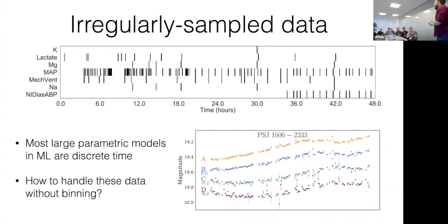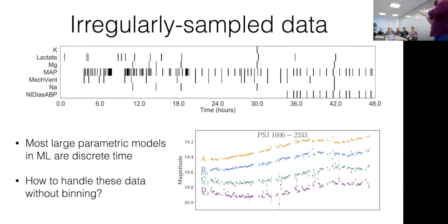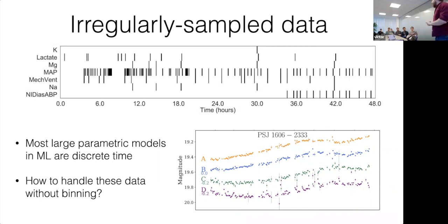This is also real data from an application of latent SDEs — maybe the first real one — which is the brightness of black holes in the middle of distant galaxies, measured over years. They only get to take a measurement every few days depending on weather and planetary alignment, so I really want to make sure we're handling this data natively and squeezing every ounce of information out of it.